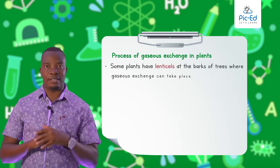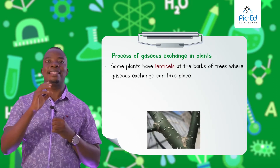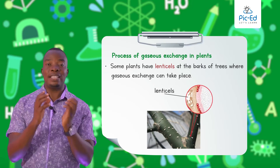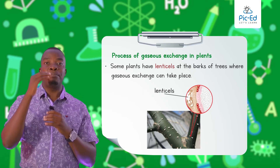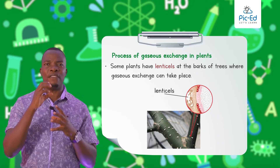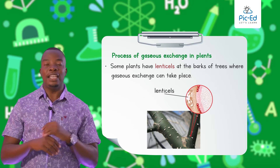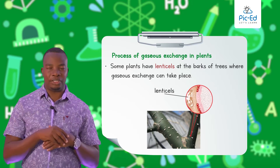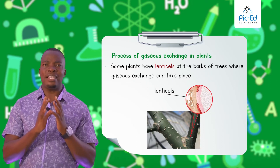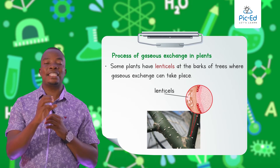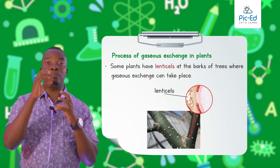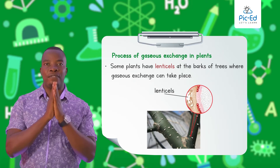Some old trees have got what we call lenticels. These lenticels are green-like structures that look as if they are going to develop into branches, but they remain green. These lenticels are also surfaces for gaseous exchange in these mature woody plants, and they are mostly found on the bark of these woody plants.